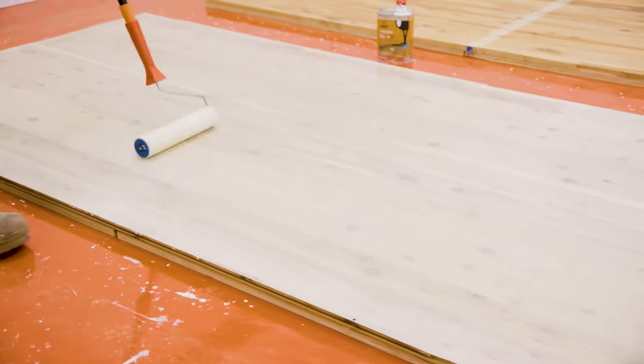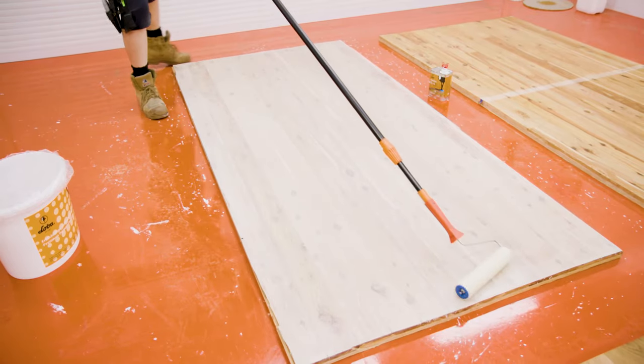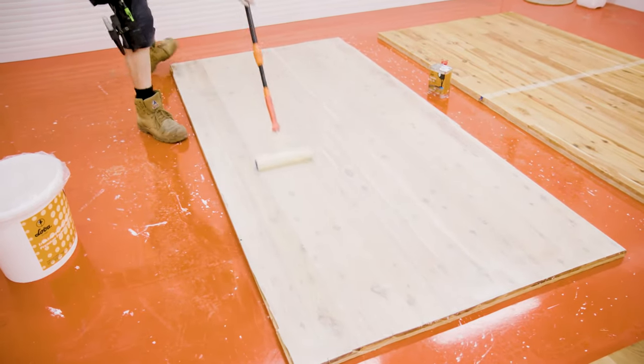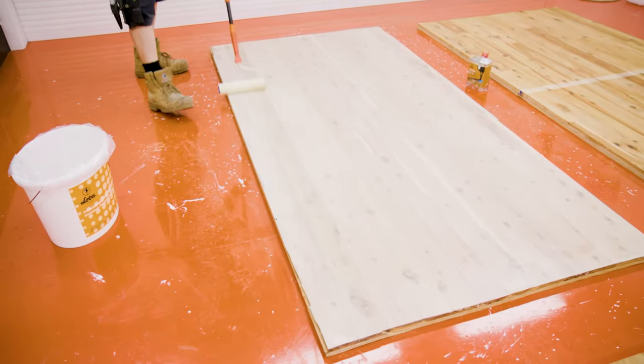After the white stain has dried, we move on to applying a sealer. This sealer is specifically designed for this purpose. The sealer should be applied evenly in the direction of the floorboards and per the manufacturer's guidelines.